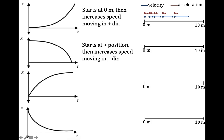Since it starts at a positive position, I have to start my motion map over here on the right. It wasn't moving initially, but it's going to start moving faster and faster, so I draw those arrows longer and longer to the left. Just glancing at this motion map, I can see it's moving to the left and going faster and faster. Because the object is increasing its speed, the acceleration must be helping the velocity, so the acceleration arrows point to the left as well.